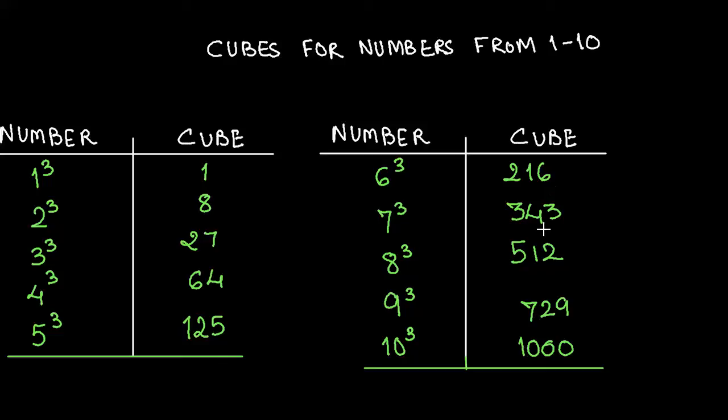5 cube is 125, 6 cube is 216, 7 cubed is 343, 8 cubed that is 8 multiplied by 8 multiplied by 8 is 512.